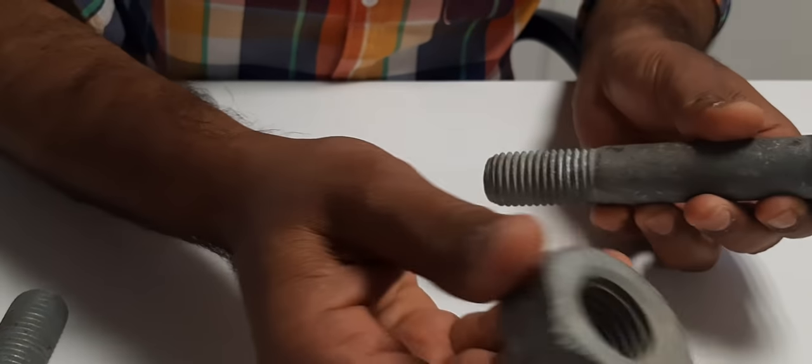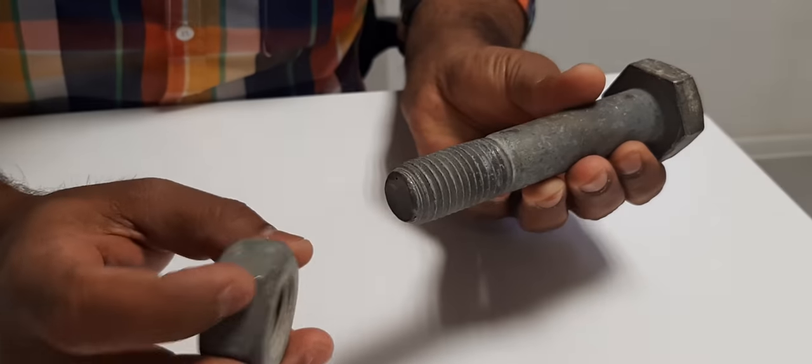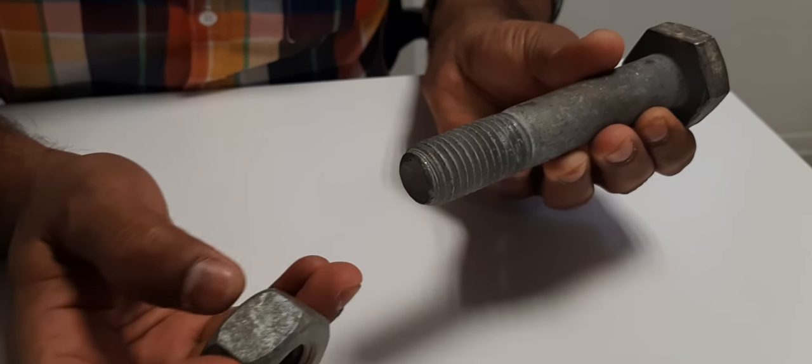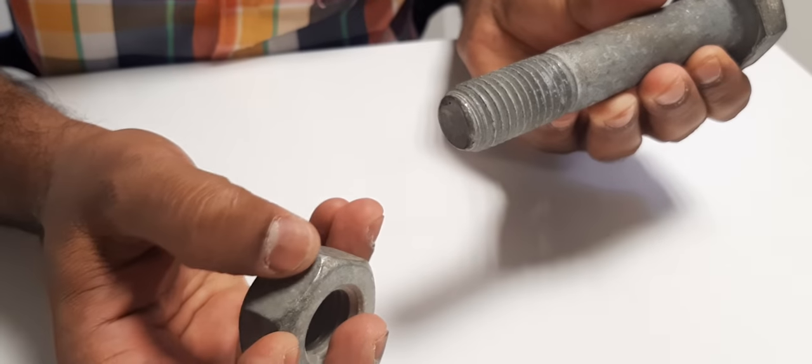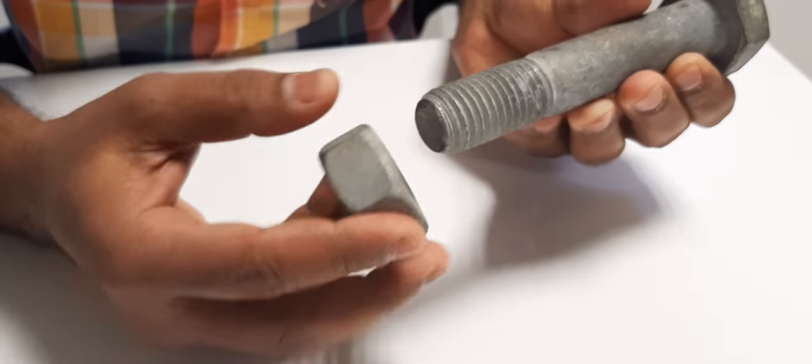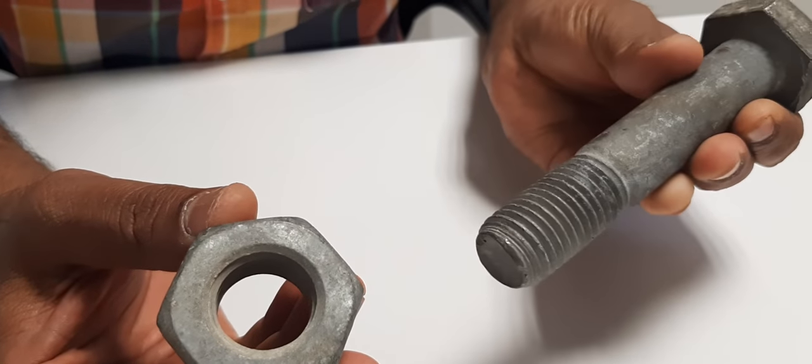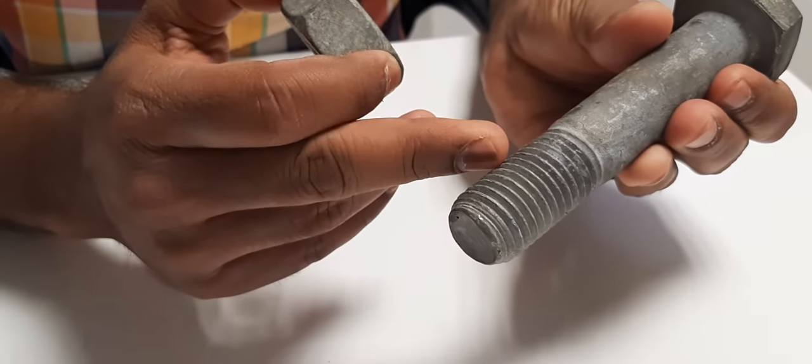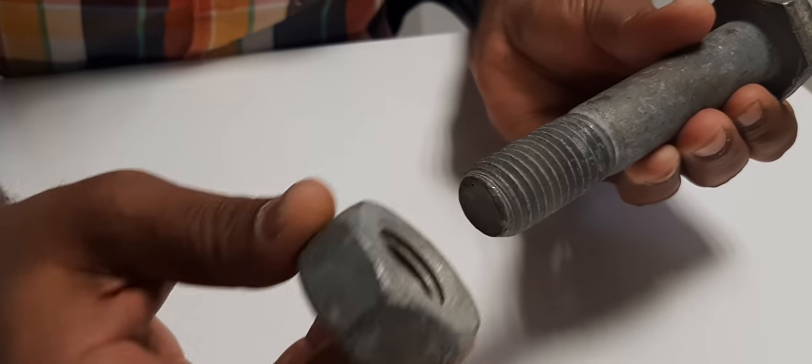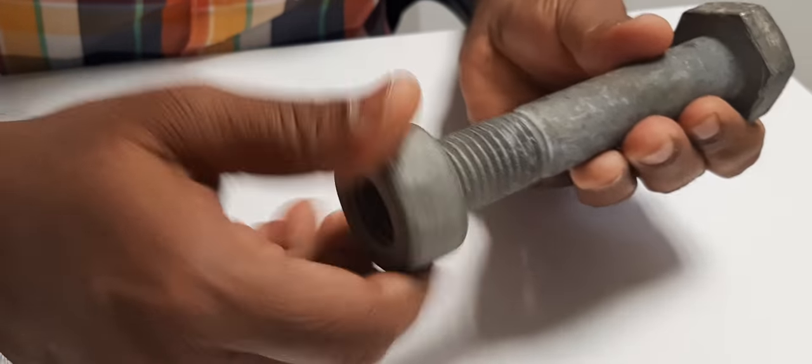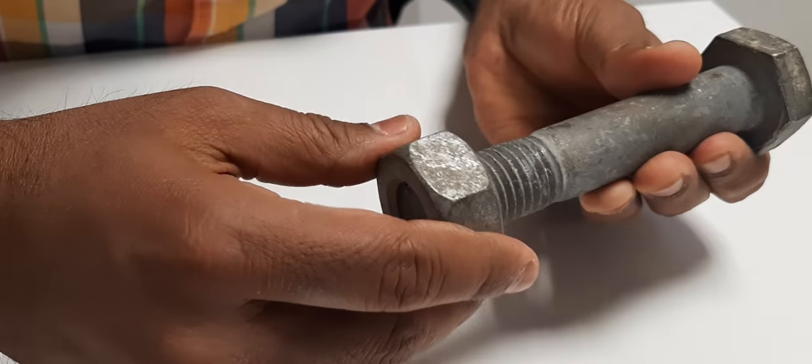The matching part is nut and the same you can find here for the identification mark. The matching part has inside thread. The bolt has outside thread. You can play with the nut. You can open and close.